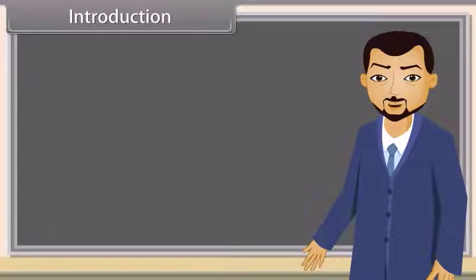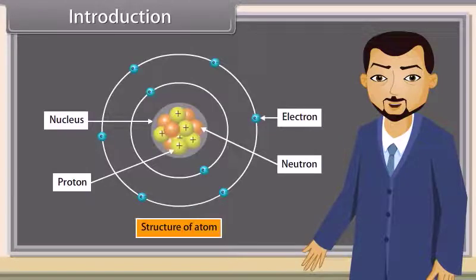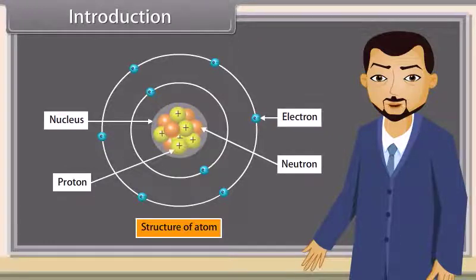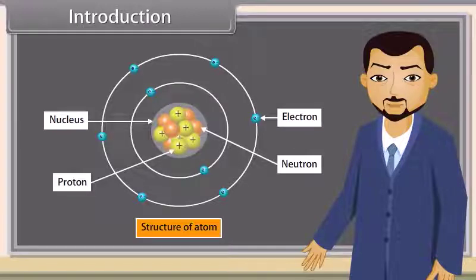Today I'll teach you the topic: structure of the atom. Atoms are the fundamental units of matter. Everything around us is made up of atoms. A typical atom consists of a nucleus of protons and neutrons, with electrons orbiting this nucleus.